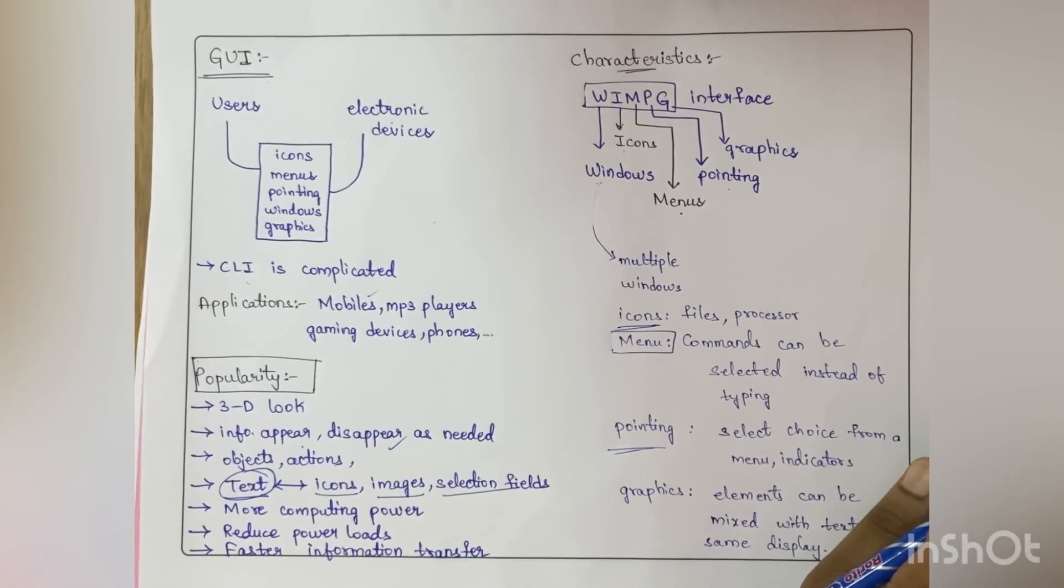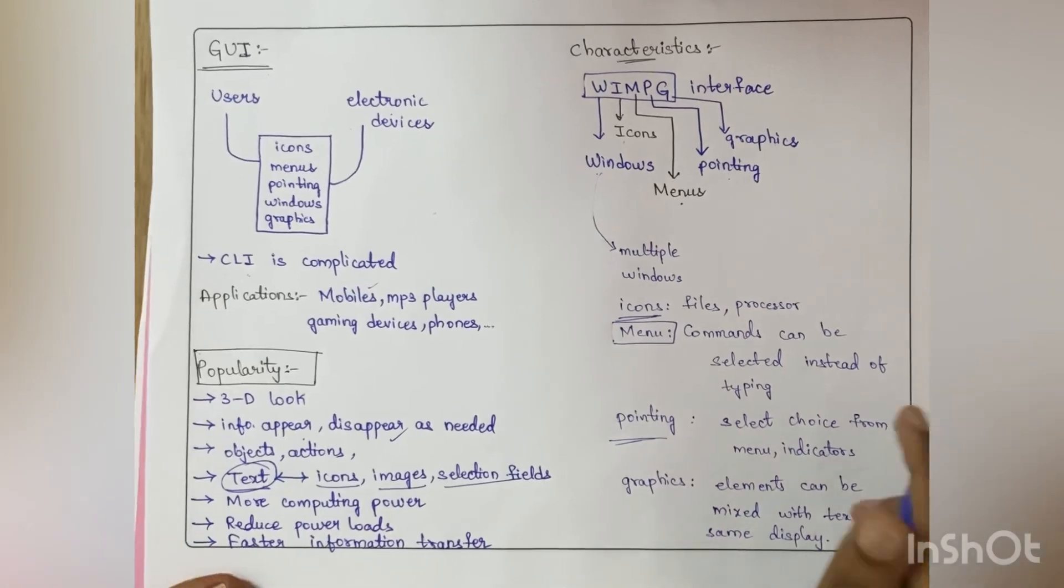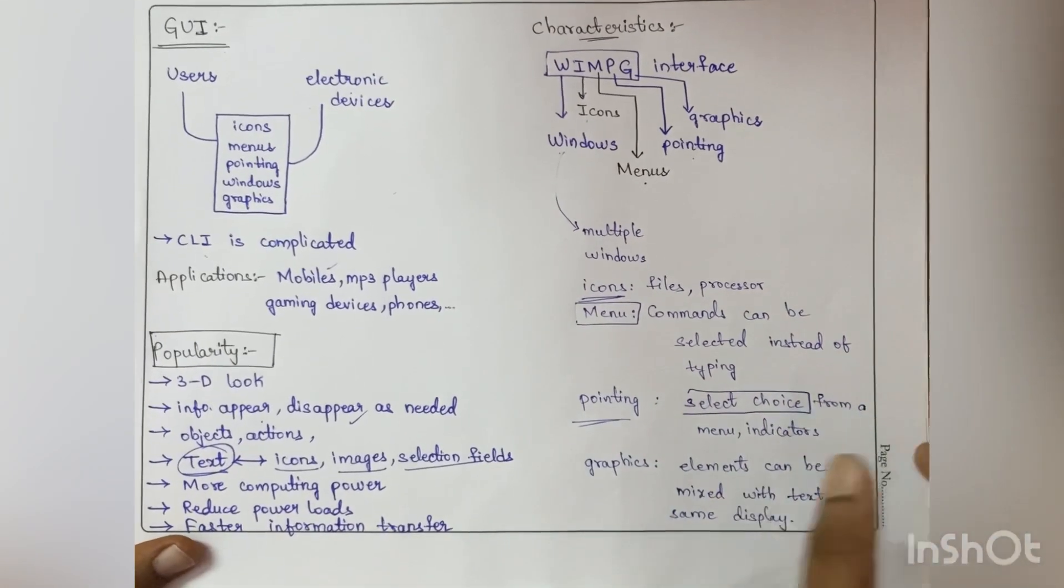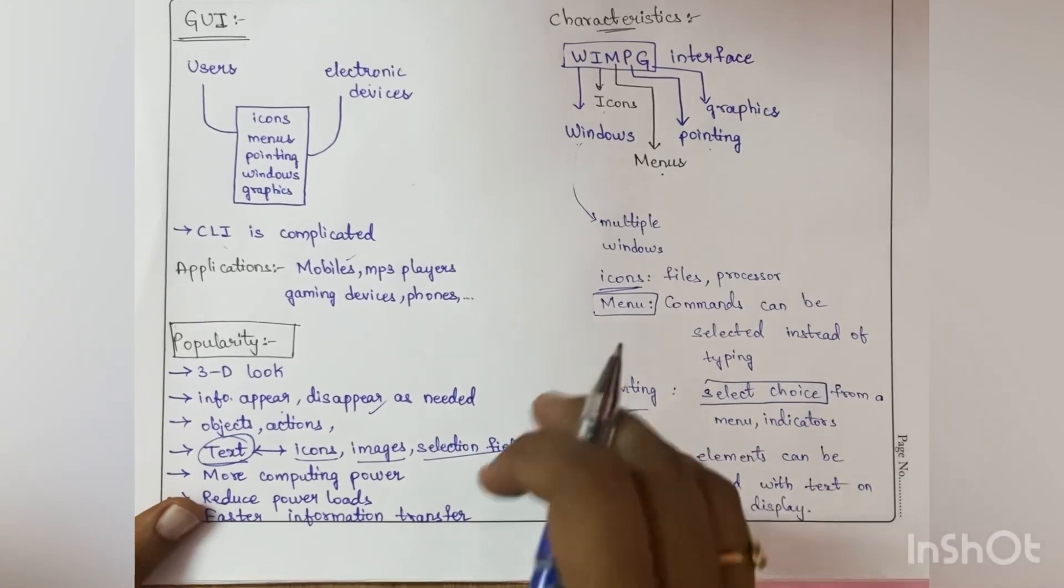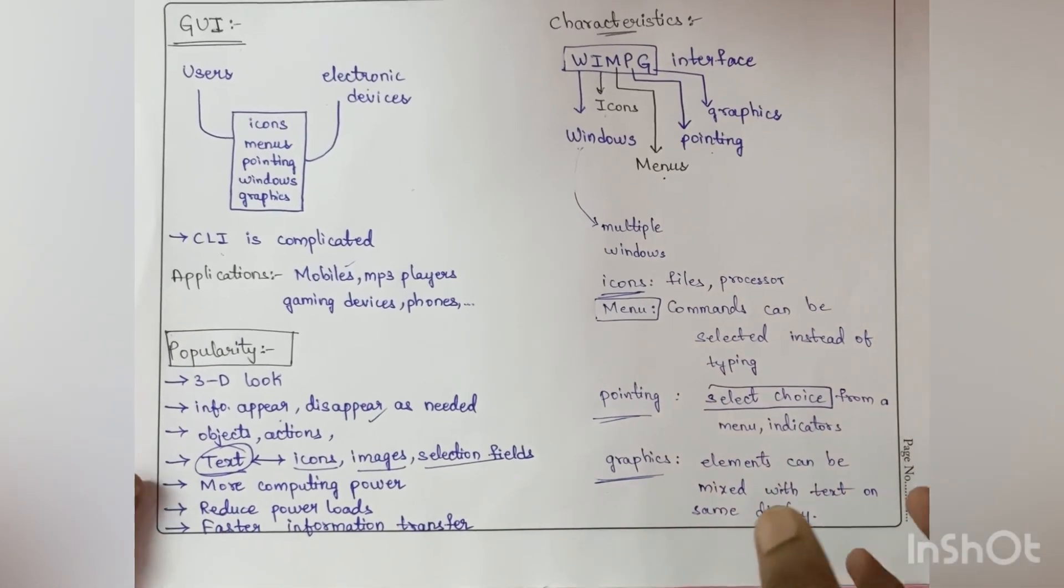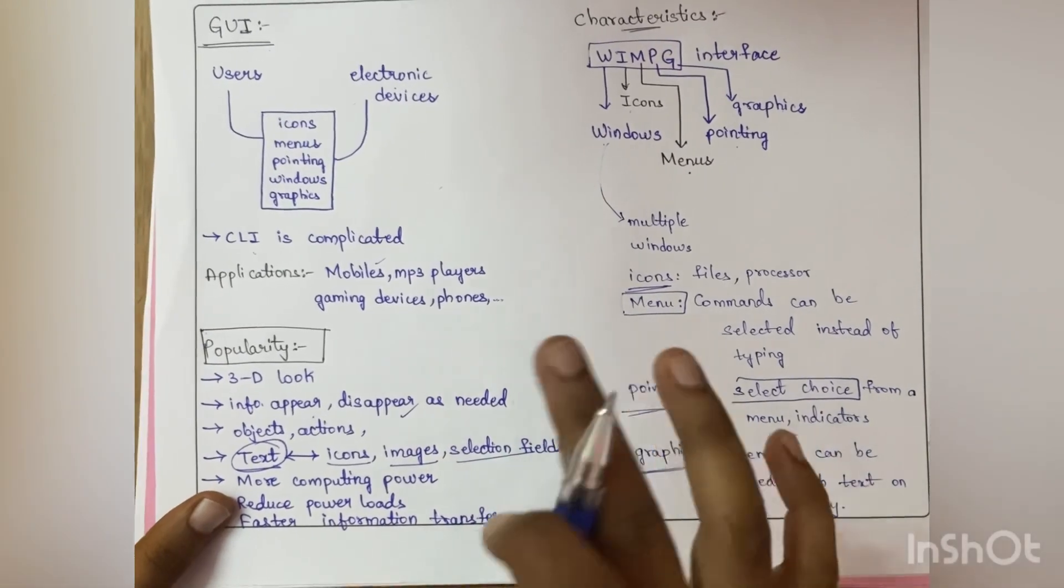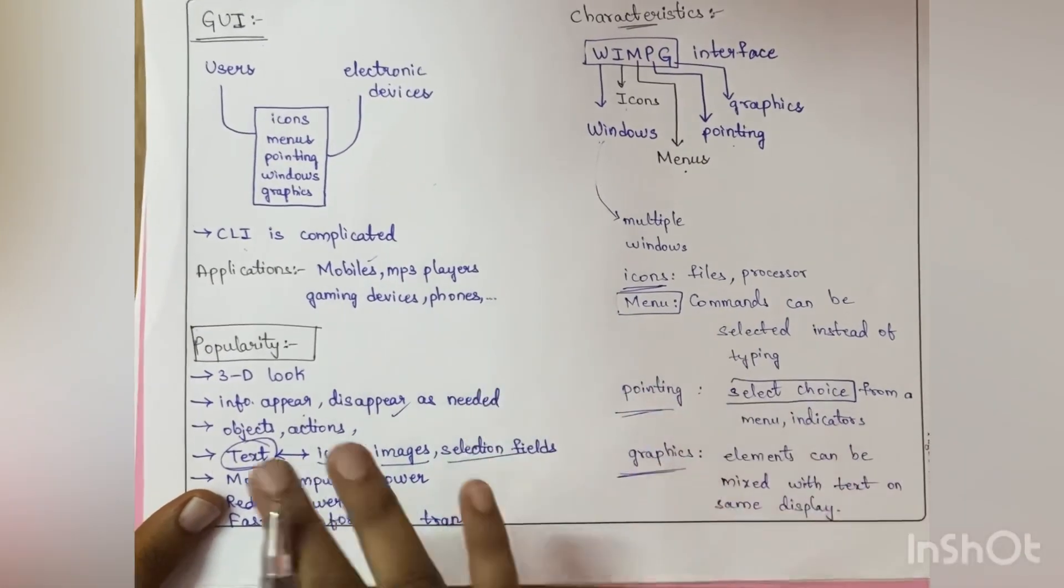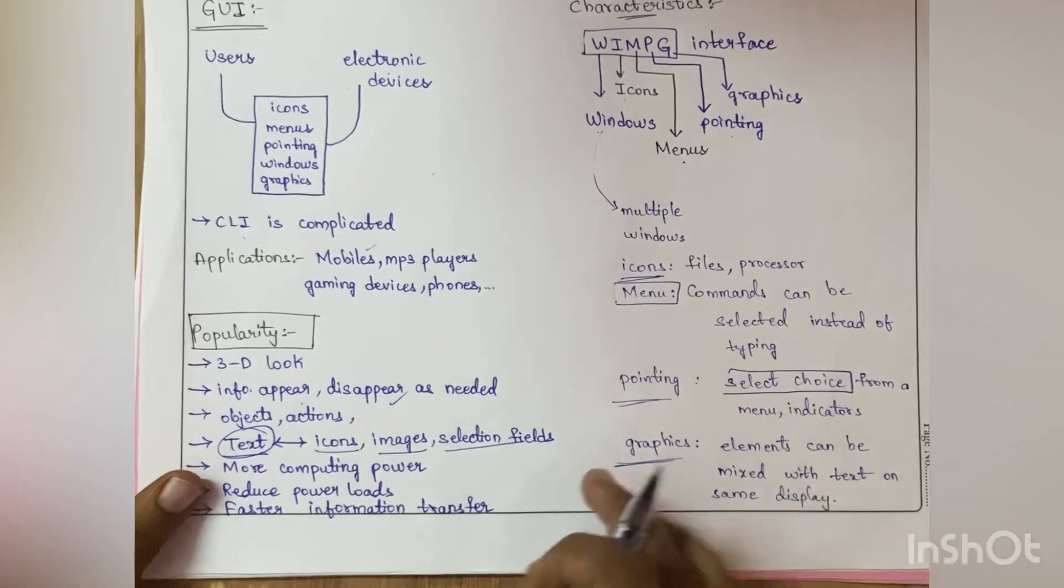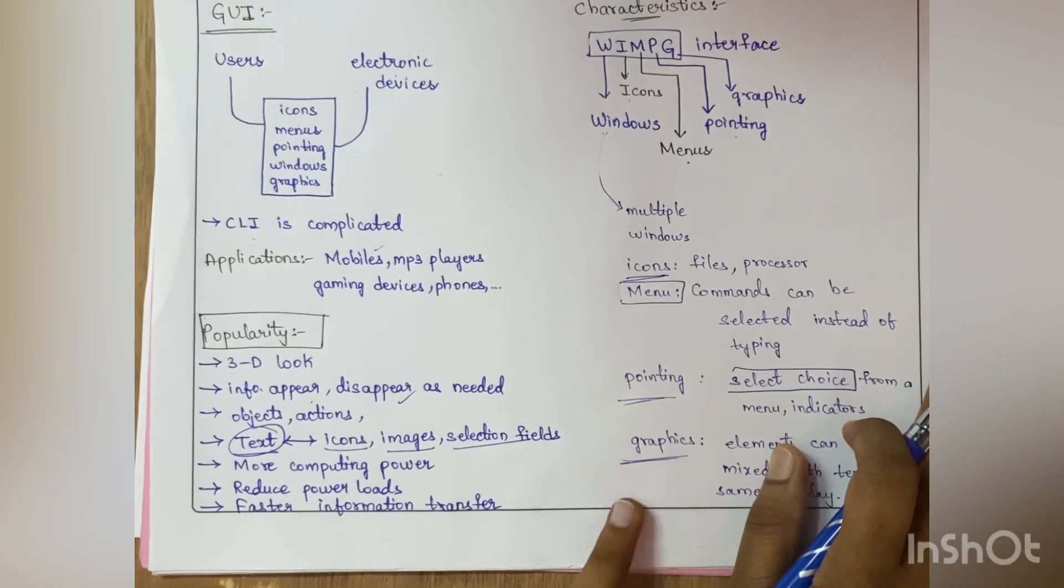You can select from the information which appears on the screen, that means selecting things of your choice using the indicators. Pointing like a mouse comes under this pointing device. Coming to graphics, elements can be mixed with text on the same display. That means on a single screen you can find text along with animations, images, all these things. Hope you all know you play many games already, so that comes under graphics.